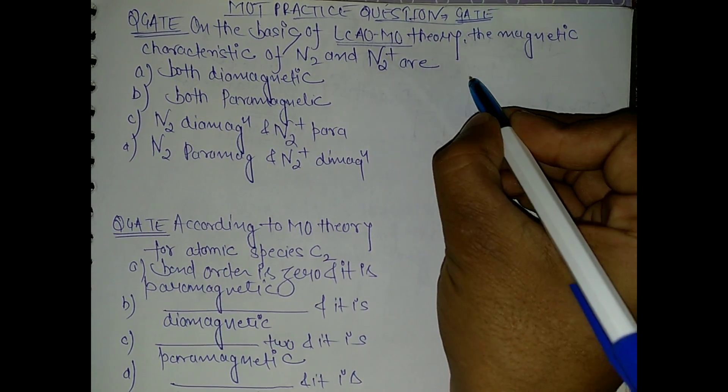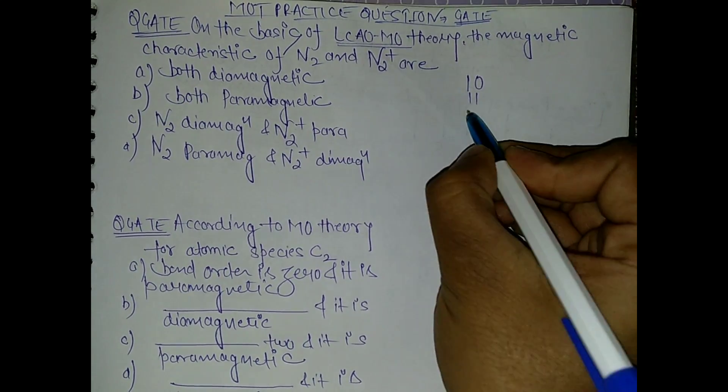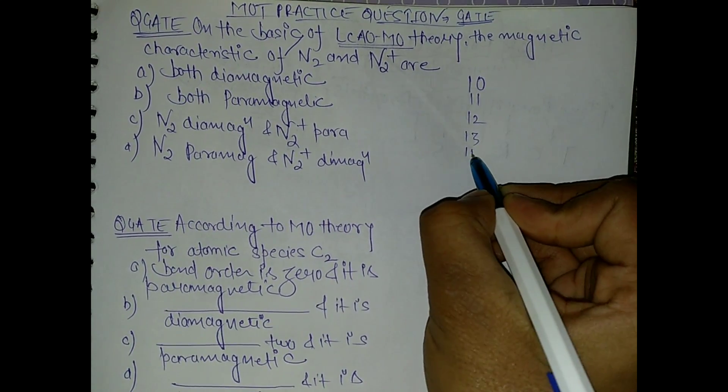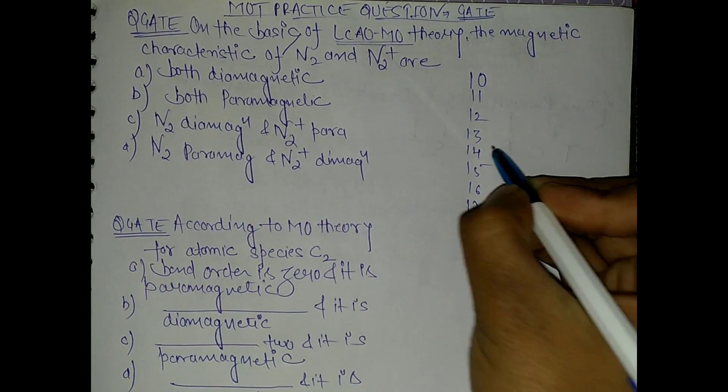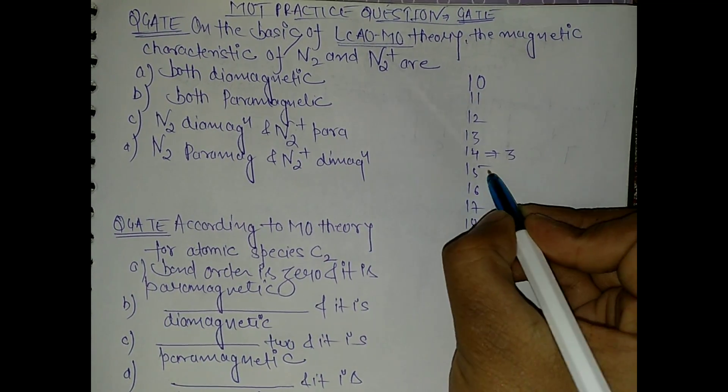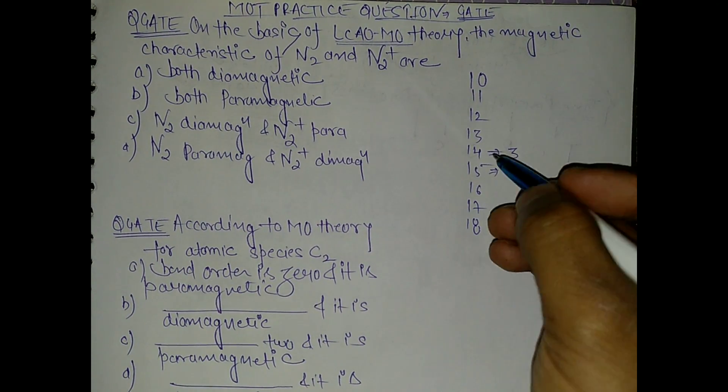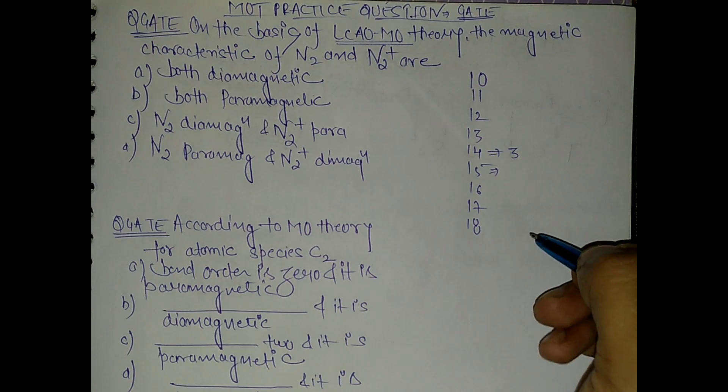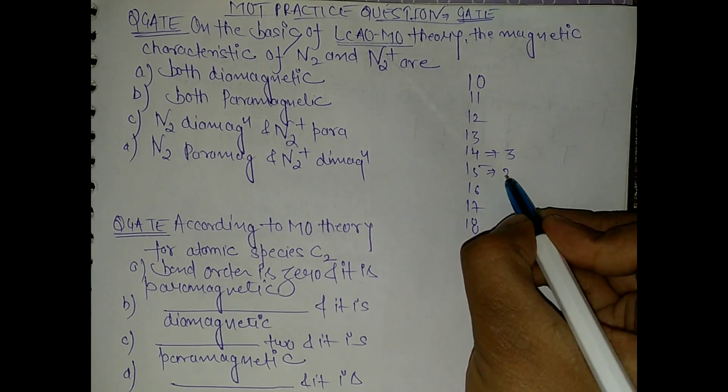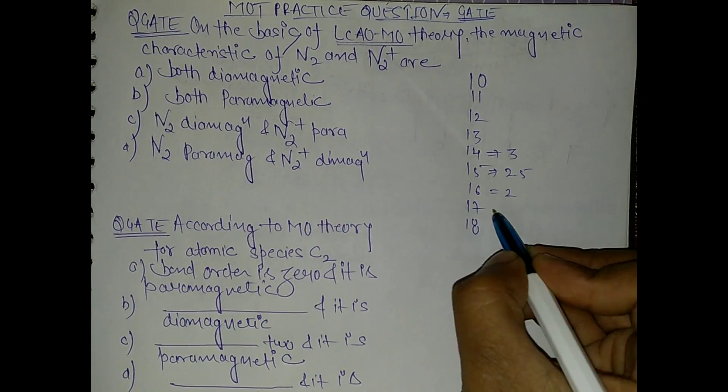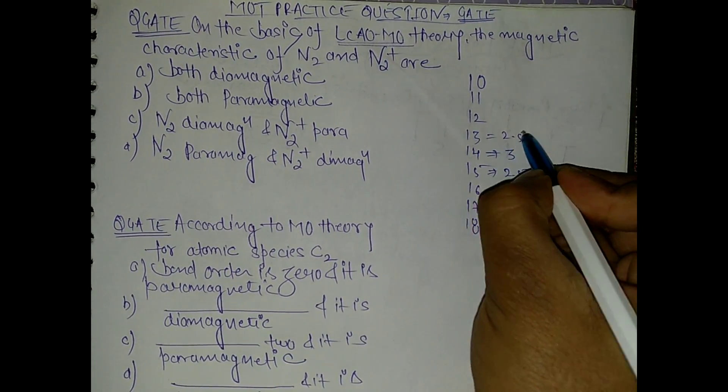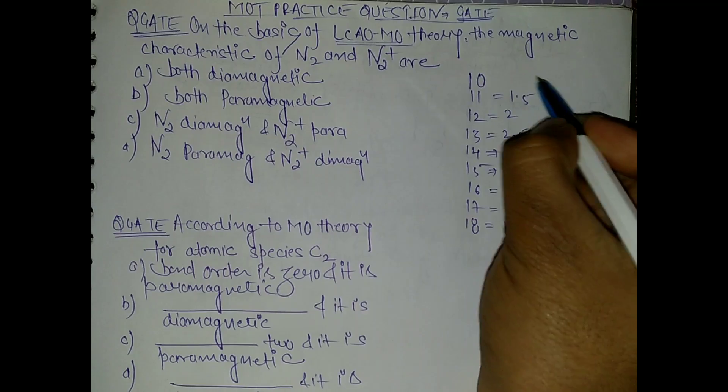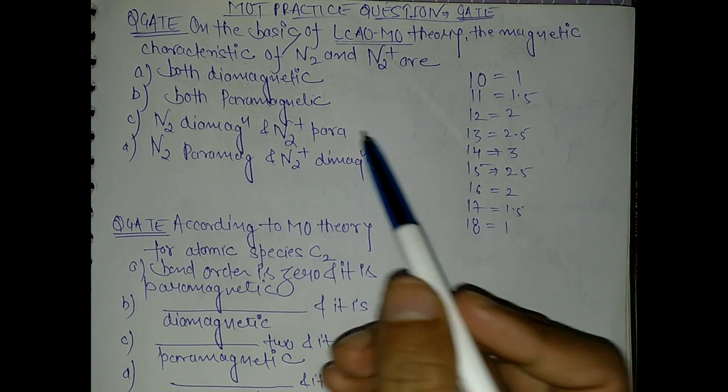Now see, there I wrote 10, 11, 12, 13, 14, 15, 16, 17, and 18. Just write here 3 and just subtract 0.5 in the uppercase as well as lowercase. So this will be 2.5, this is 2, this is 1.5, this is 1. And this is 2.5, this is 2, this is 1.5, this is 1.